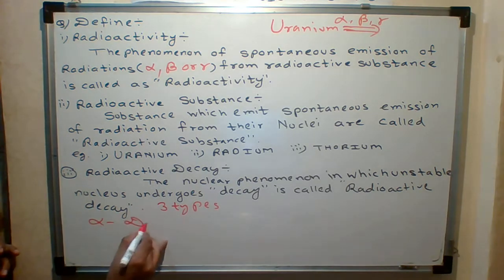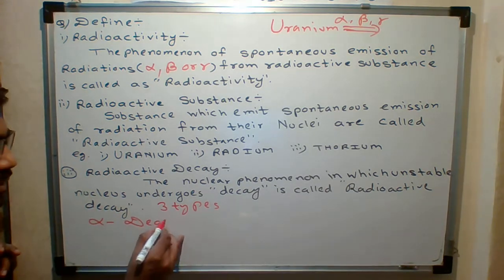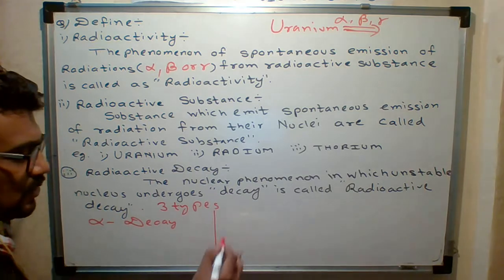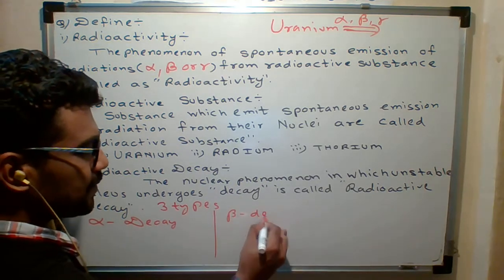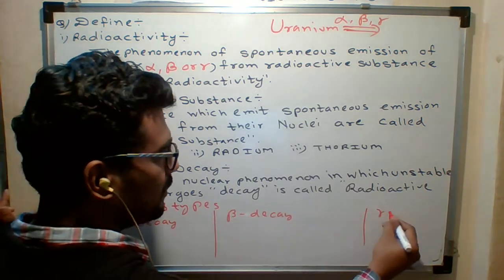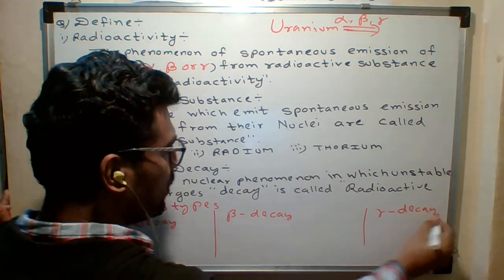First is alpha decay. Radiation decay is beta decay. Last is gamma. That you have to understand.